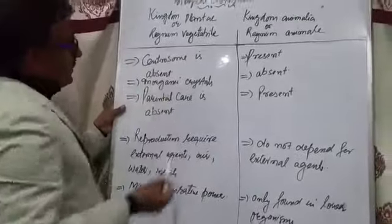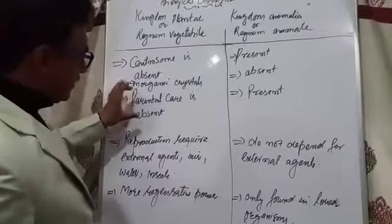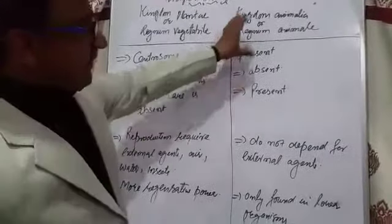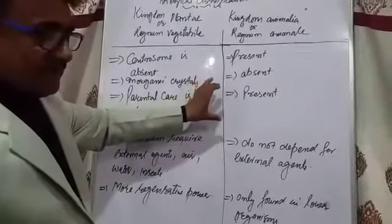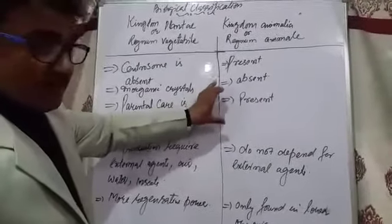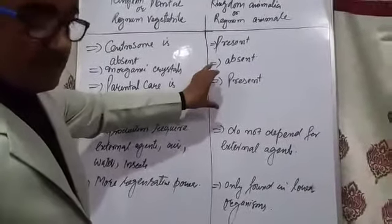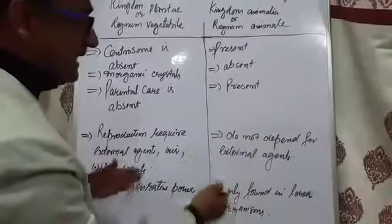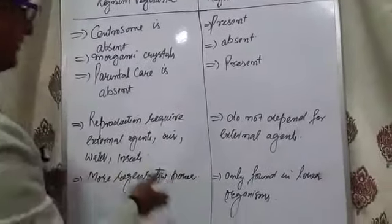Kingdom Plantae does not show care of their young ones or their offspring, while parental care is present in Kingdom Animalia. In case of animals, they lay their eggs, hatch them, and nourish their offspring, or they give birth to young ones and nourish them until they become independent. So parental care is present in Kingdom Animalia and is almost absent in Kingdom Plantae.